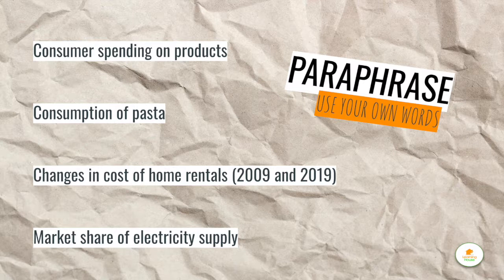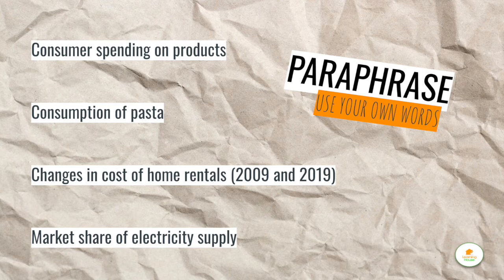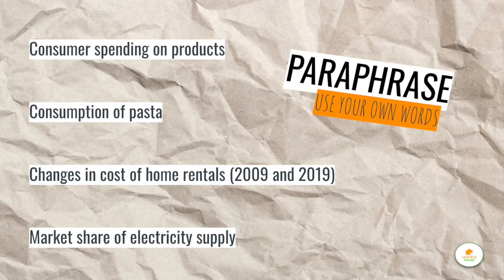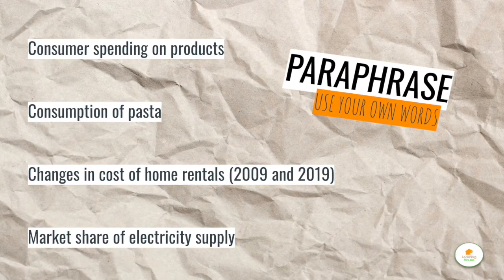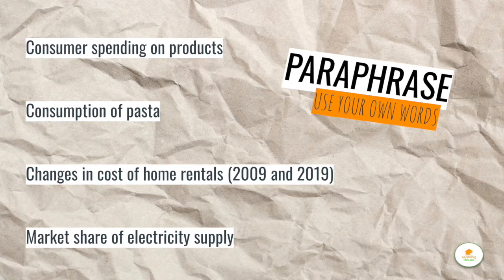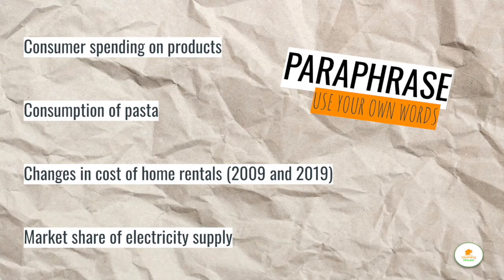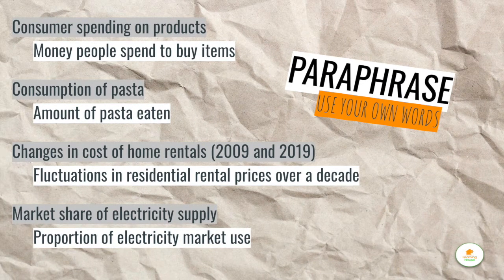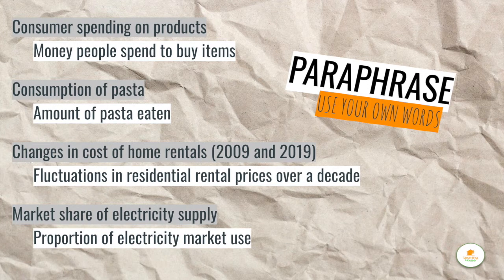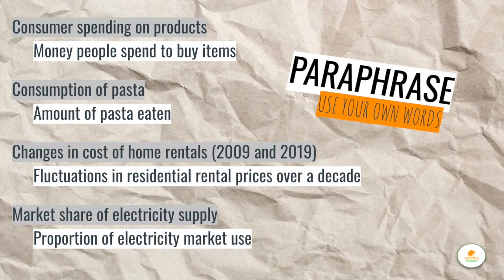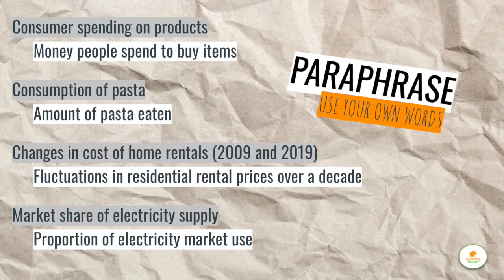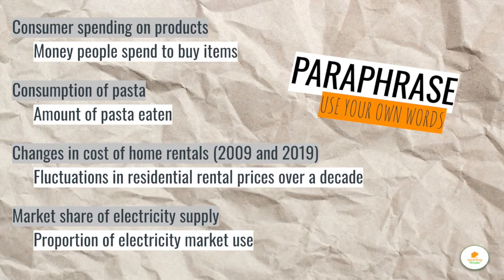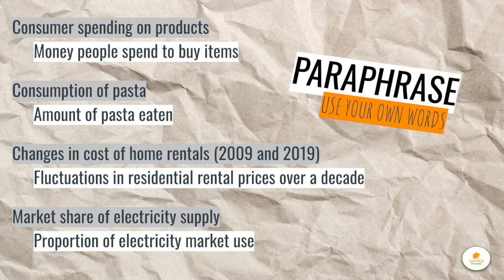Paraphrasing is using your own words. There are certain terms and words listed in the actual question, and you want to think about how you can restate them. For example, 'consumer spending on products' — spending also means money, and products can be called items, so you could say 'money people spend buying items.' 'Consumption of pasta' could become 'amount of pasta eaten.' This is where your vocabulary studying really helps you.